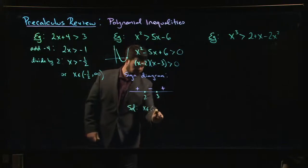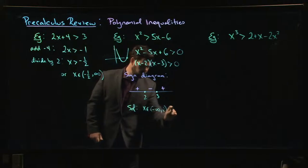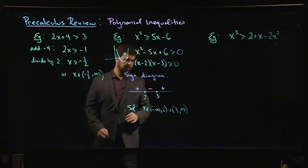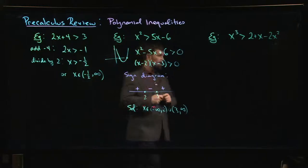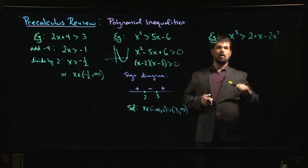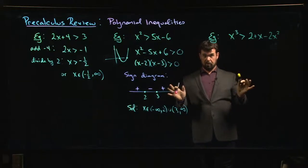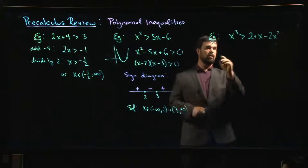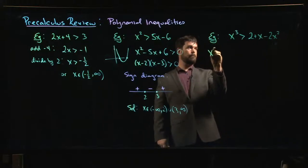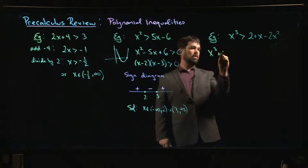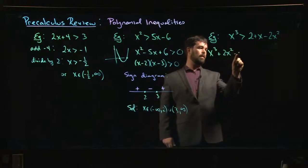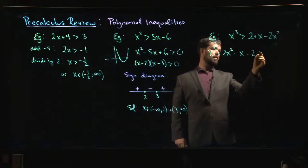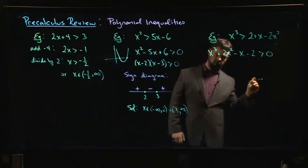Alright, one last one: cubic inequality. Maybe there's a bit more work involved here, but the initial strategy is still the same. Bring everything over: x cubed plus 2x squared minus x minus 2, we want that to be bigger than 0.